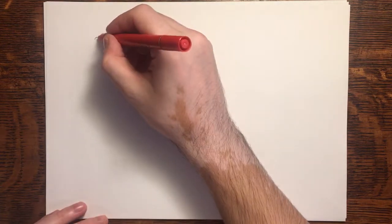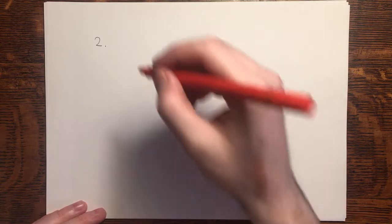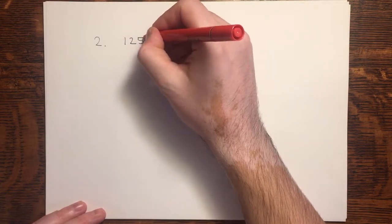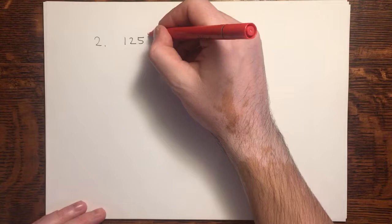Question 2 from review exercise 1. Now this also relates to indices. In question 2a, we are asked to find the value of 125 to the power of 4 thirds.